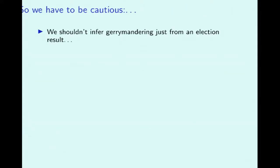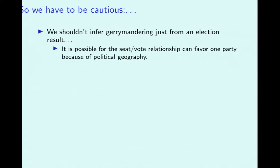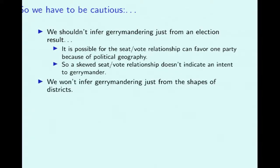So to summarize: we shouldn't infer gerrymandering just from election results, because the seat-vote relationship could favor one party due to the political geography of the state. And we shouldn't infer gerrymandering just from the shapes of districts — the most important reason being that if you pass a law requiring nice shapes, people will just come back and gerrymander with those shapes. Gerrymandering works on basic principles — splitting up cities, packing cities — and you can do those with all sorts of shapes.